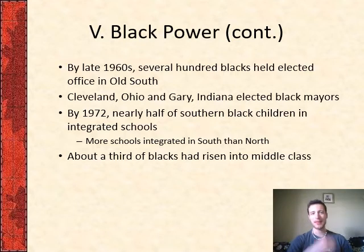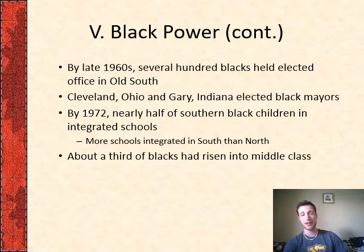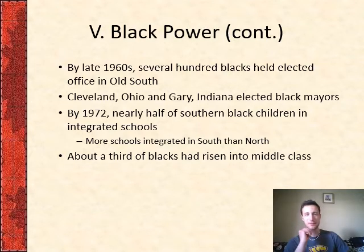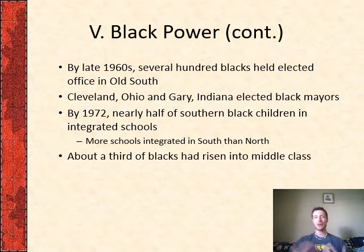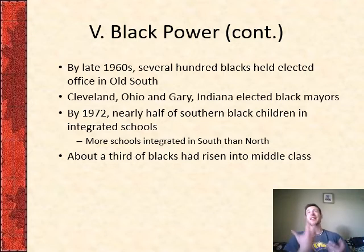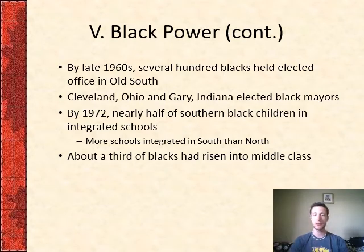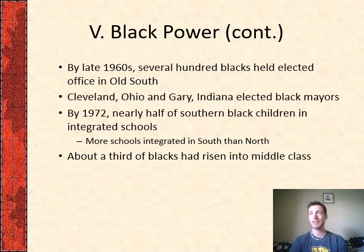By the late 1960s, several hundred blacks had been elected in the Old South, and northern big cities had started electing African American mayors — Carl Stokes was elected mayor of Cleveland, Ohio, and Gary, Indiana also elected a black mayor. By 1972, nearly half of Southern black children were in integrated schools — more schools were actually integrated in the South than the North, because the South had made specific effort to intentionally integrate while the North had a lot of residential segregation that still permeates society today. About a third of blacks had actually risen into the middle class by the time you get into the 70s — a lot of strides being made as a result of the movement and federal action.